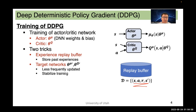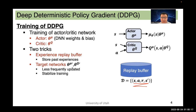The second trick is called target networks, which are just copies of the original actor and critic networks, but their weights are less frequently updated. The reason to use these networks is to stabilize the training process.